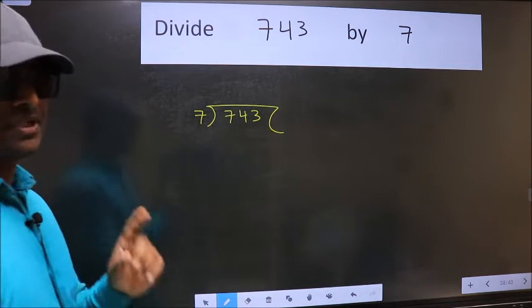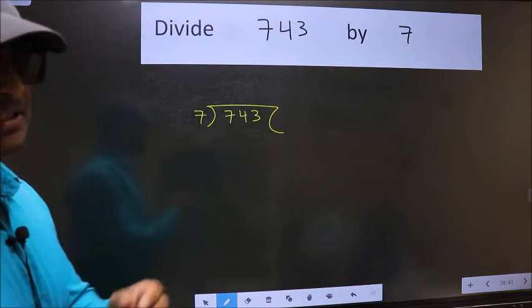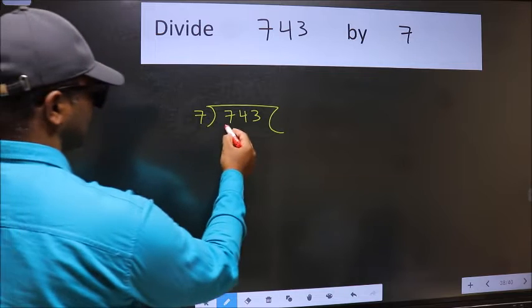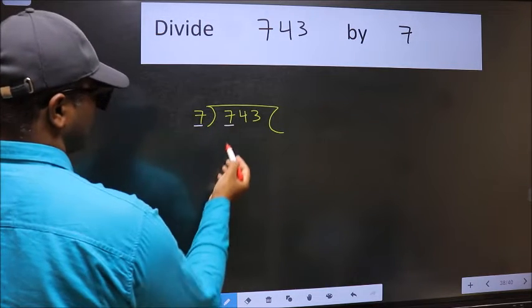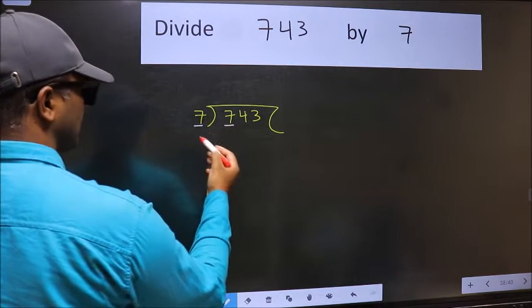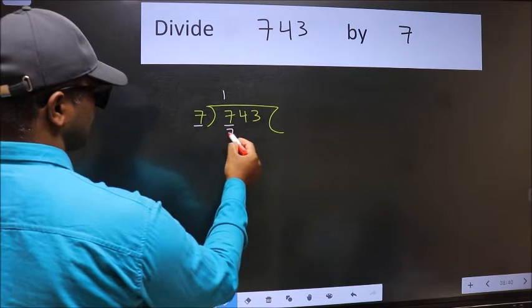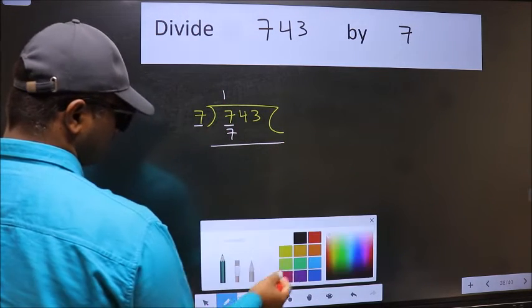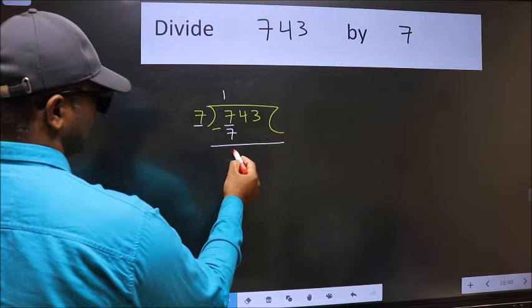This is your step 1. Next, here we have 7 and here 7. When do we get 7 in 7 table? 7 times 1 is 7. Now we should subtract. We get 0.